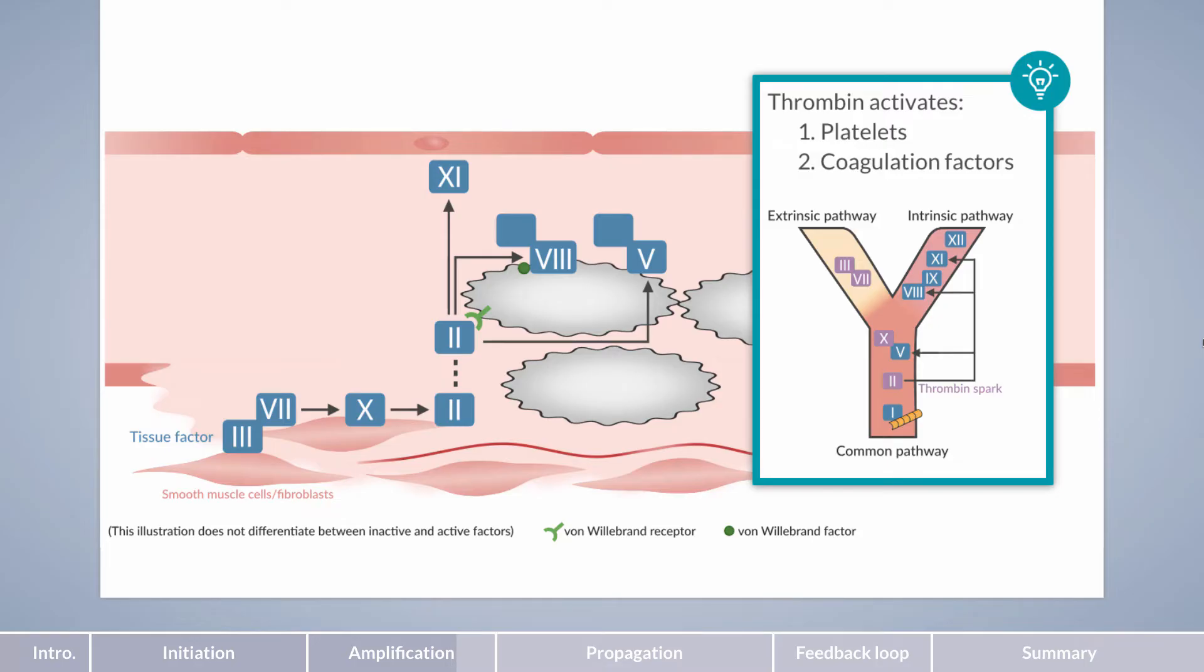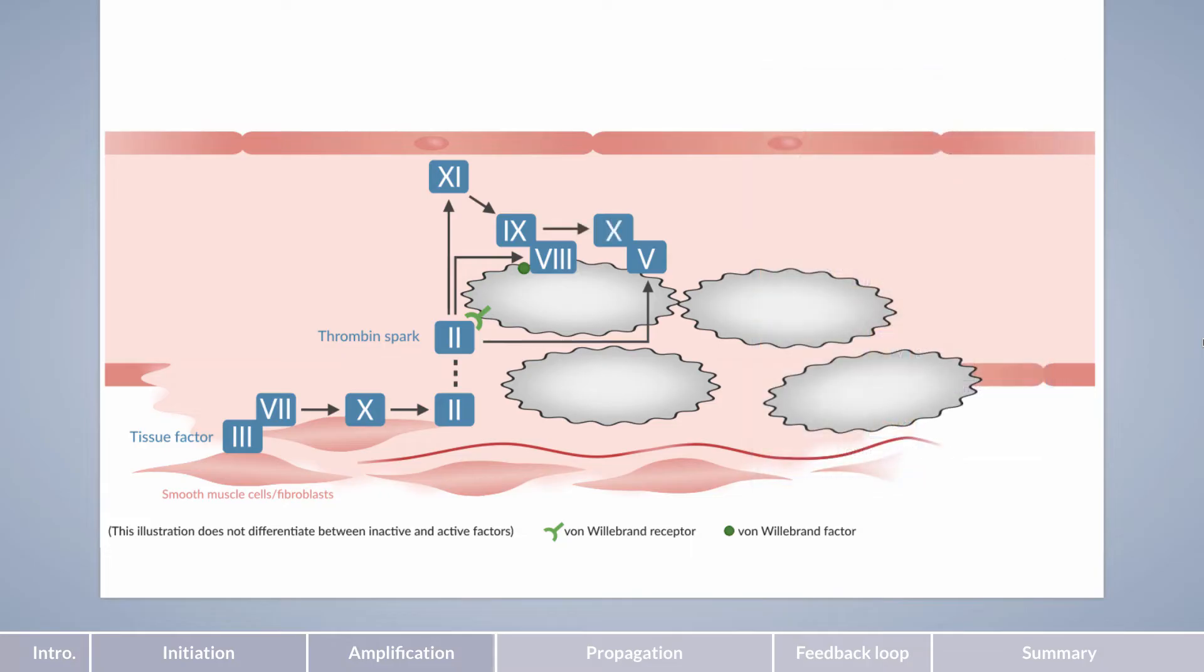Now, back to the coagulation process. Up until this stage, we've mentioned that a small amount of thrombin is generated, which activates factors 11, 8, and 5. Activated factor XI subsequently activates factor IX, which then forms a complex with factor VIII. This complex, comprising factors IX and VIII, activates factor X.